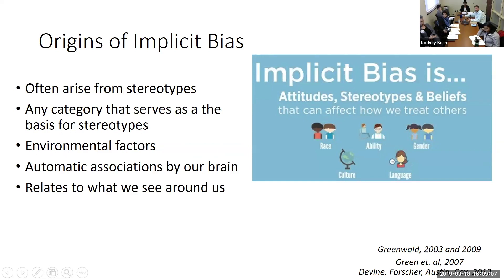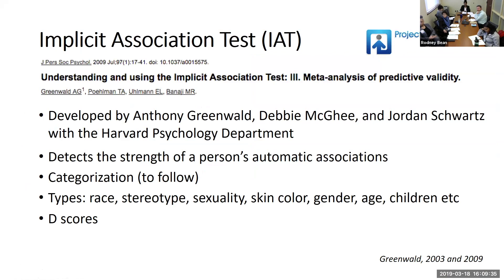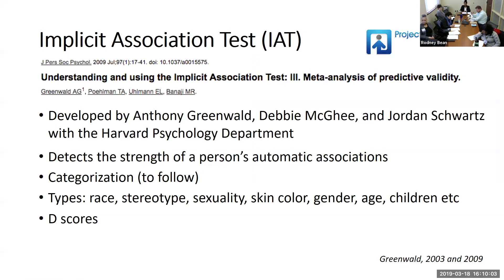Implicit bias often arises from stereotypes. Its principles are not limited to race — they also apply to gender, sexual orientation, age, and disability. Often these spontaneous reactions arise from stereotypes and influence our impressions of people and how we treat them. We all learn and develop unintentional bias related to different social groups. Implicit bias can be quantified and tested using the IAT — the Implicit Association Test — developed by Greenwald and colleagues in conjunction with the Harvard Psychology Department. It measures the strength of a person's automatic associations, asking participants to categorize certain stimuli. There are different types of IAT: race, stereotype, skin color, gender, age, and more. Implicit bias is measured by a D-score.